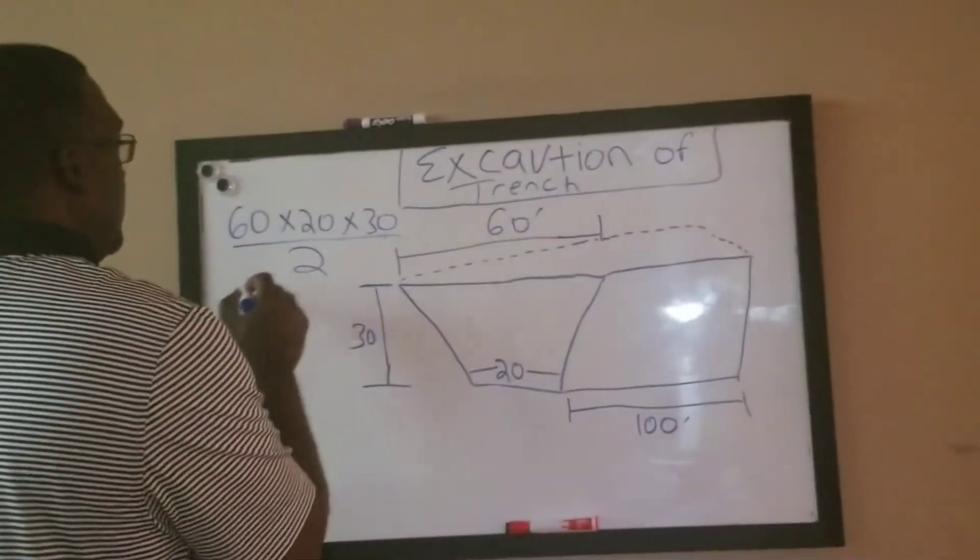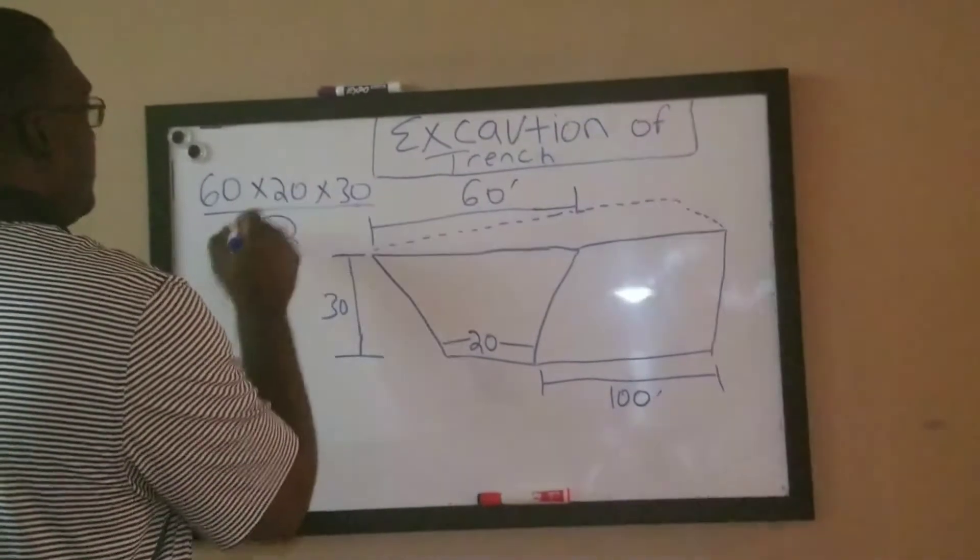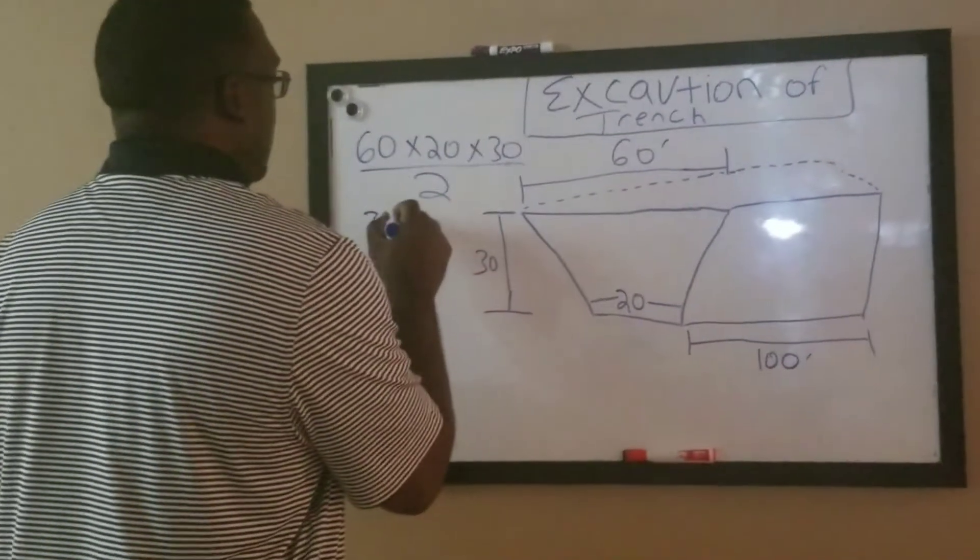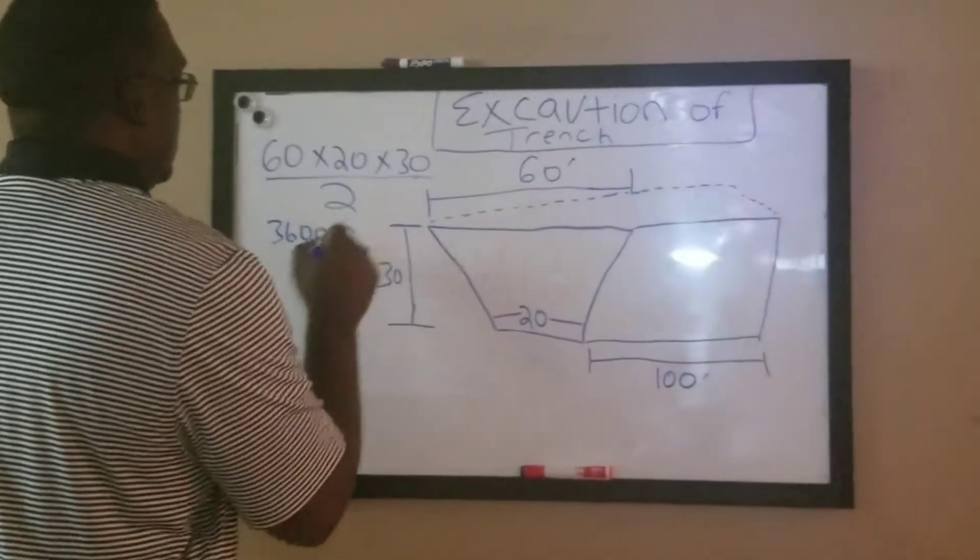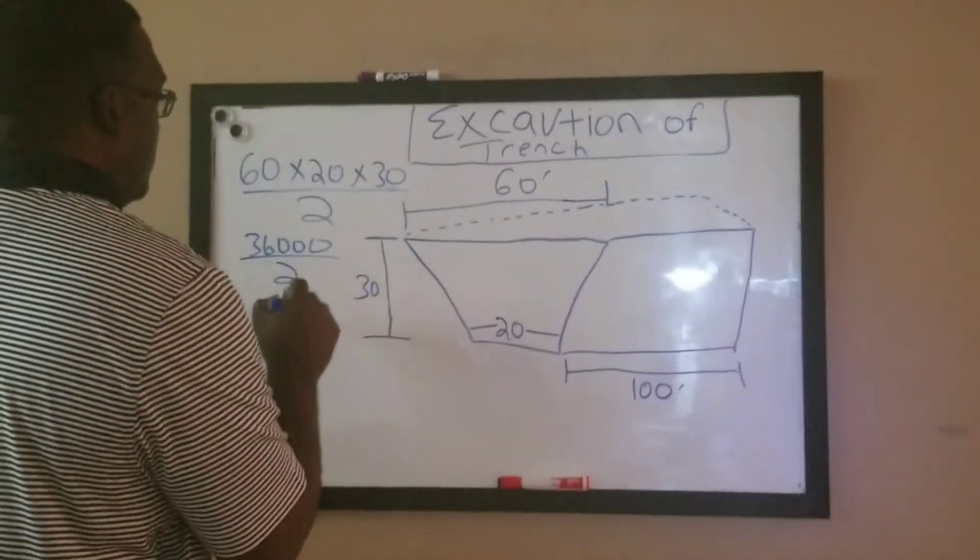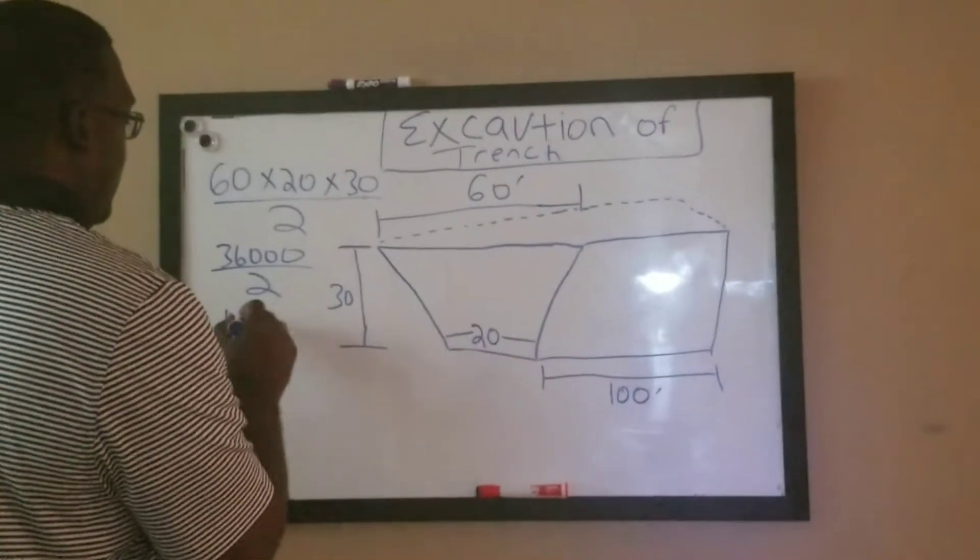Alright, so you got 60 times 20 times 30, so that's 36,000 divided by 2, and that's 18,000.